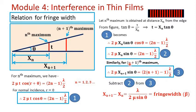Similarly, we can write the condition for the (n+1)th maximum. For the (n+1)th maximum, xn is replaced by xn+1 — the distance of the (n+1)th maximum from the edges in contact — and n is replaced by n+1. So for the (n+1)th maximum, the condition is: 2 mu xn+1 sin theta equal to (2n+1 minus 1) lambda by 2. We label the nth maximum condition as equation 2 and the (n+1)th maximum condition as equation 3.